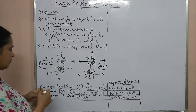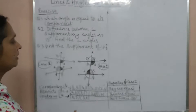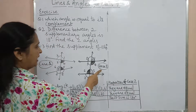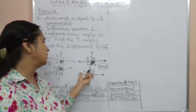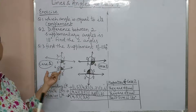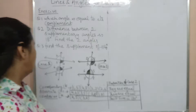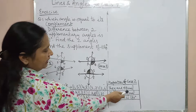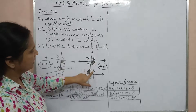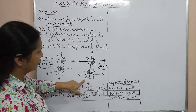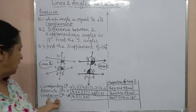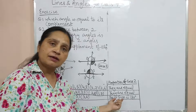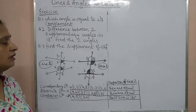In Case 2, where the two lines are parallel, the properties apply. If the lines are not parallel, these properties do not hold. For parallel lines cut by a transversal: corresponding angles are equal (1=5, 4=8, 3=7, 2=6), alternate angles are also equal, and co-interior angles have a sum of 180 degrees.